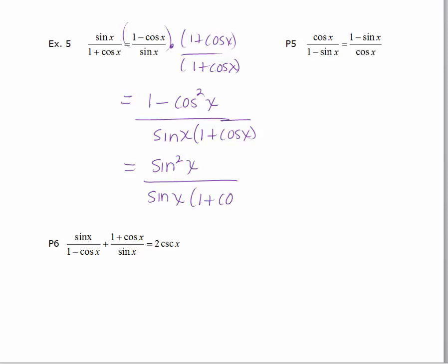Keeping the left-hand side in mind because this is what I need to get to. I'm almost there. I have sine squared x in the numerator and sine x in the denominator. This cancels one of each. And so I'm left with sine x in the numerator and 1 plus cosine x in the denominator. And I'm done.